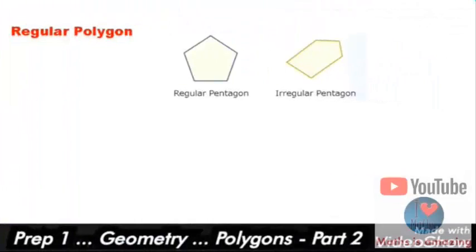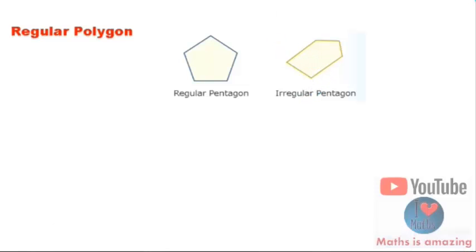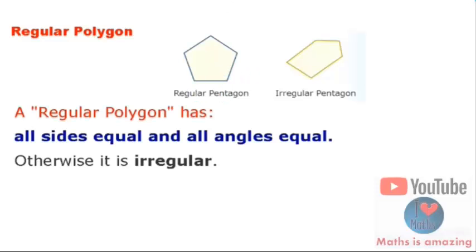This is about regular and irregular polygons. Here we have a regular pentagon and an irregular pentagon. In the irregular pentagon, all sides are not equal. But in a regular pentagon, the sides are equal. There is another difference: in a regular polygon, all sides are equal and all angles are equal.